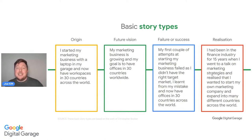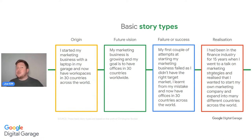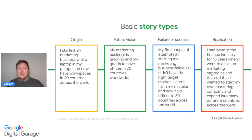Ways of doing this can be to create story types. An origin story: 'I started my marketing business with a laptop in my garage and now have workspaces in 30 countries across the world.' You're giving a little bit of background, a little bit of empathy of how you started — showing that anybody can start like that. A future vision: 'My marketing business is growing and my goal is to have 30 offices in 30 countries.' You're showing your dream, your passion, where you want to go.